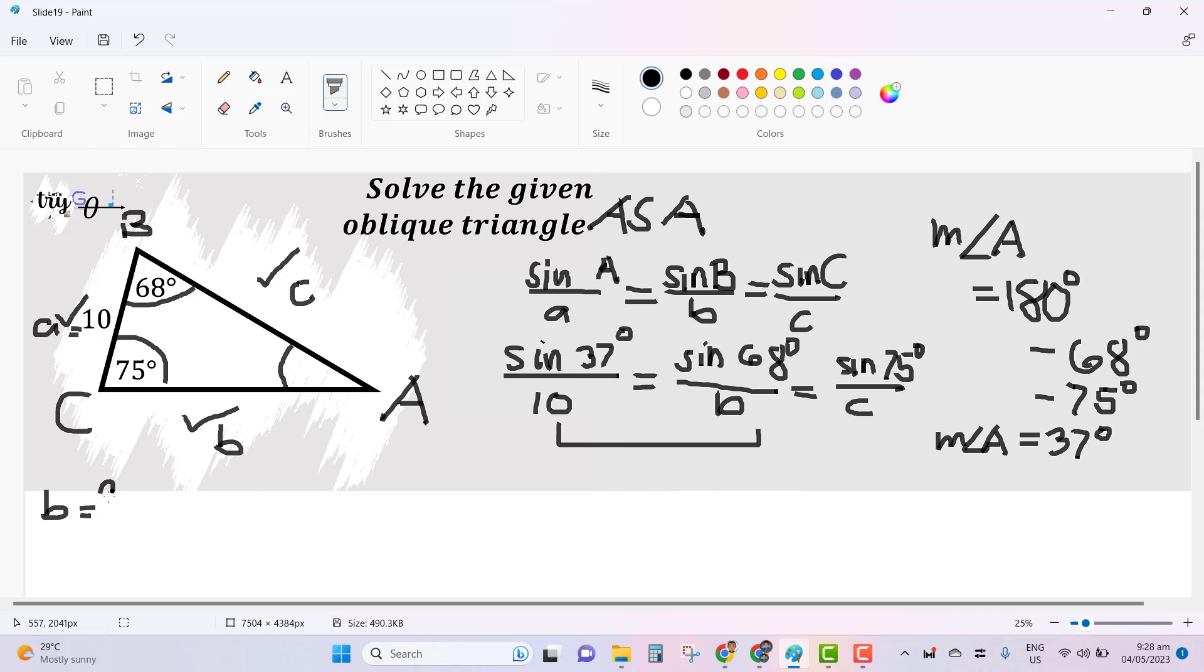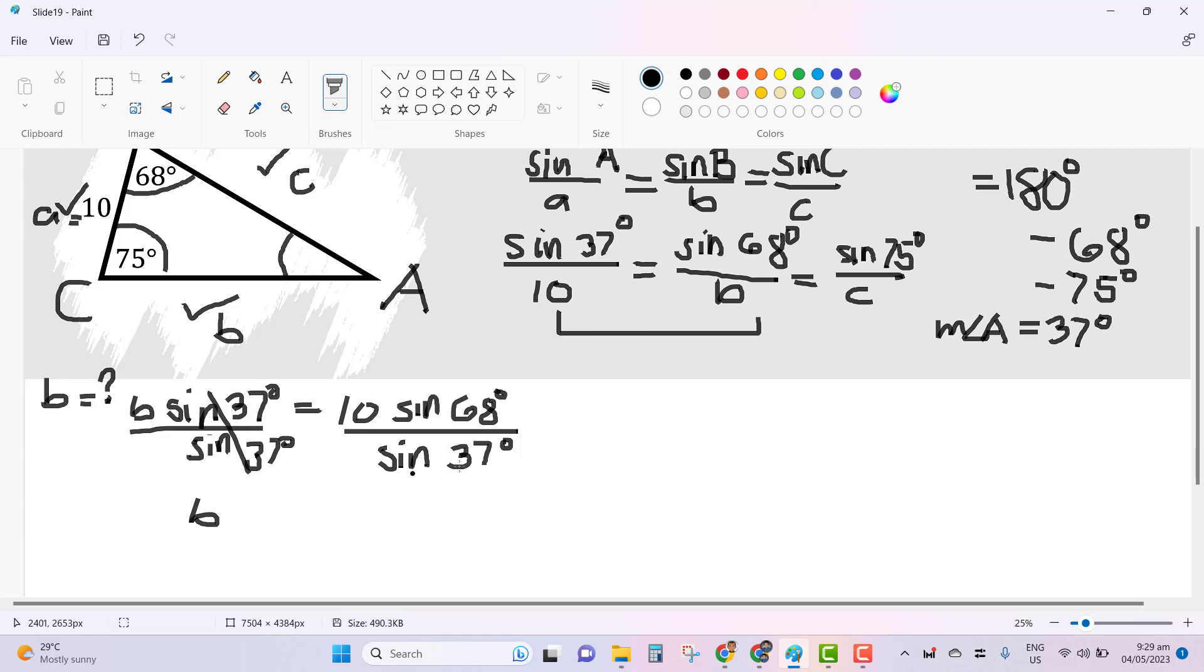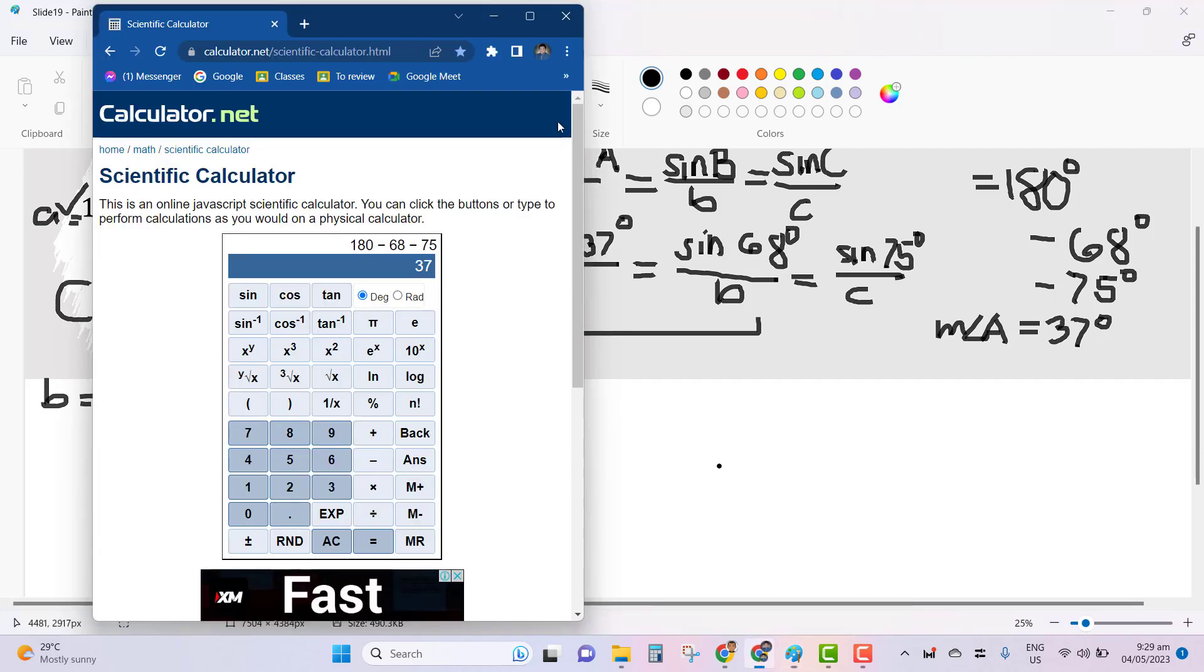Let's start with side B. In solving for side B, we could pair the first ratio with complete details to the second involving the unknown variable B. We could use here the fundamental law of proportion or cross multiplication. And hence we will get B sine 37 degrees, if cross-multiplied, is equal to 10 sine 68 degrees. Then we are solving for B, so let's divide this side by sine 37 degrees. This would mean B can be solved by solving this entire expression.